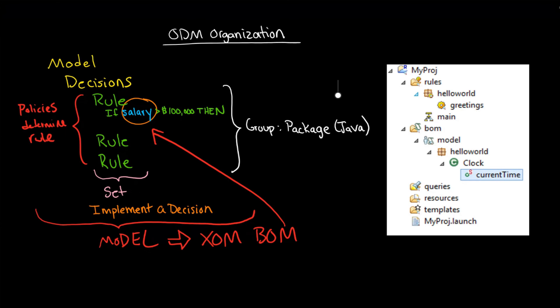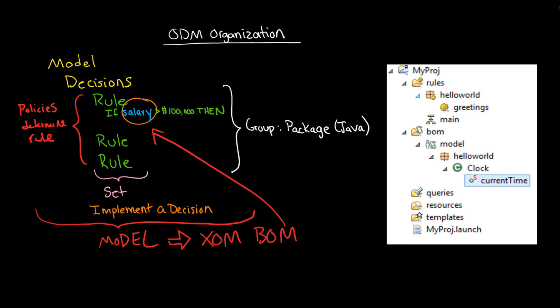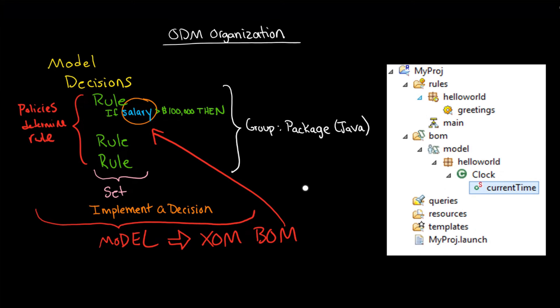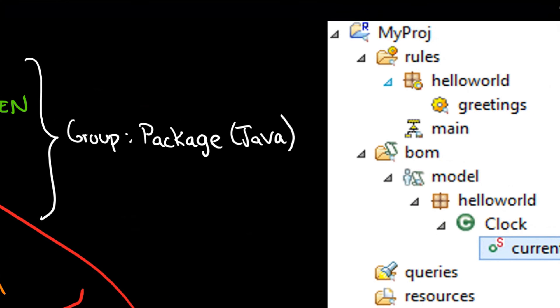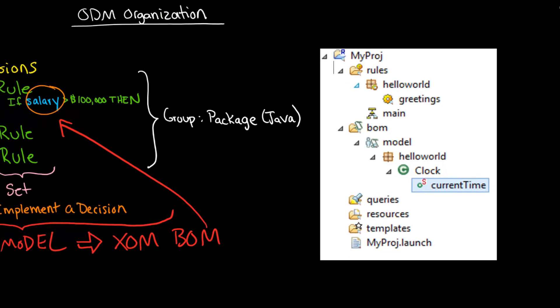So after you have been working for a while inside of the designer, you'll eventually get to something that looks like this. So here you can see a project. This is called my project. There is an R here that's supposed to represent a rule. So this is a rule project is what that means.